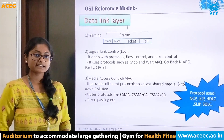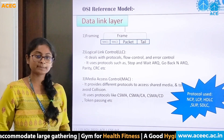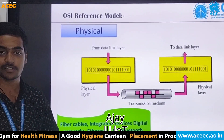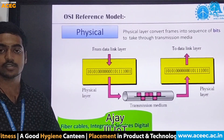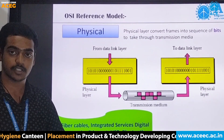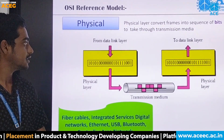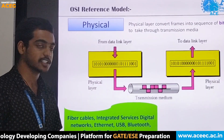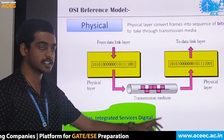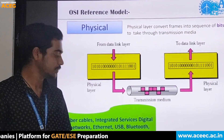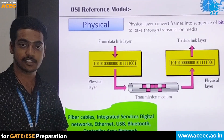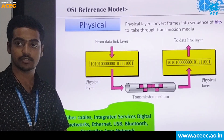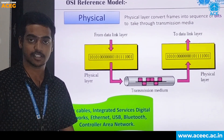Protocols used in the data link layer include NCP, LCP, and HDLC. The first layer in the OSI reference model is the physical layer. It transmits data frames into raw bits for transmission. Data frames are converted into individual bits sent to the receiver. We use wired or wireless transmission media such as fiber cables, USB, Wi-Fi, and other cables.